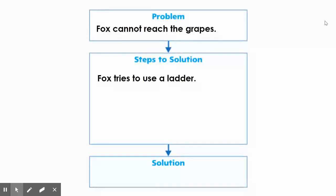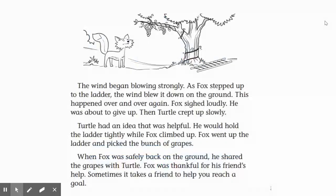The wind began blowing strongly. As Fox stepped up to the ladder, the wind blew it down on the ground. This happened over and over again. Fox sighed loudly. He was about to give up. Then Turtle crept up slowly. Turtle had an idea that was helpful. He would hold the ladder tightly while Fox climbed up. Fox went up the ladder and picked the bunch of grapes.